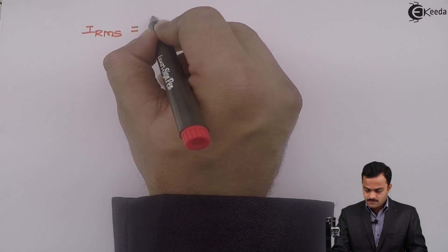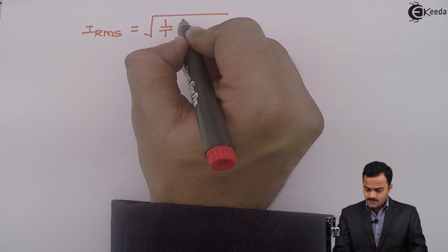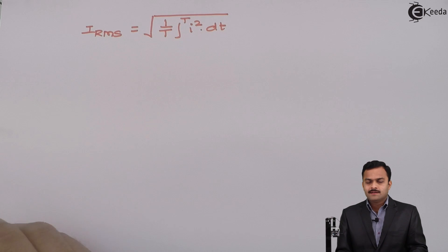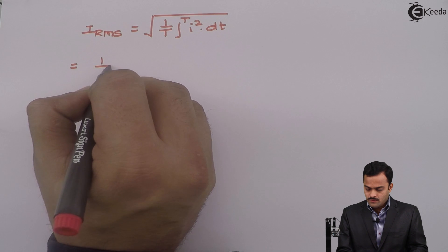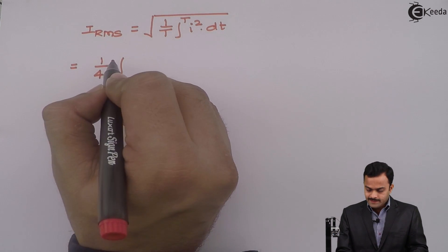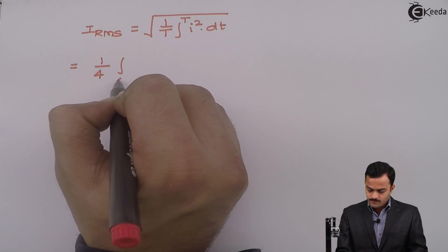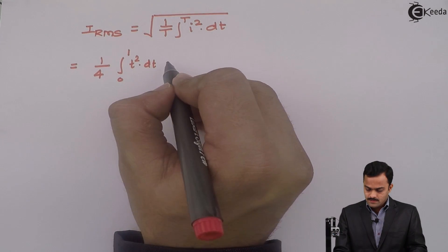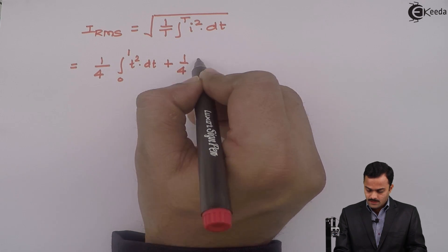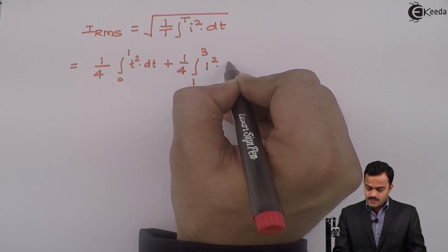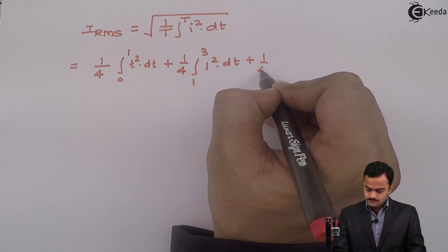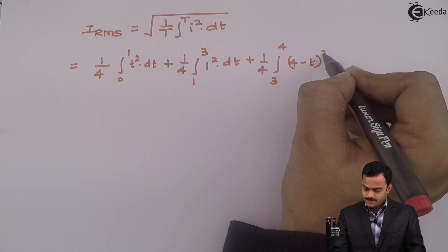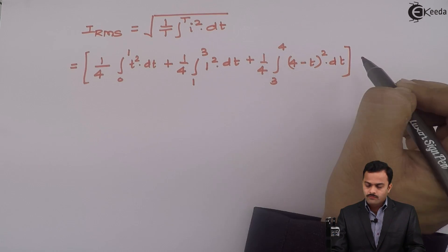Now let's solve for the RMS value. RMS is the root of 1 by T, integrated over a complete time period T of i squared dt. So it is the root of 1 by 4, with three parts: from 0 to 1 where i is t, so t squared dt; from 1 to 3 it is 1 squared dt; and from 3 to 4 it is (4 minus t) whole squared dt. And ultimately we have to take the root of this.